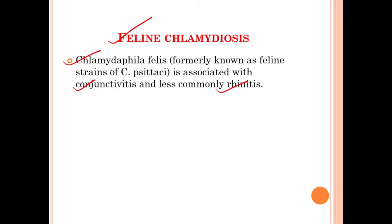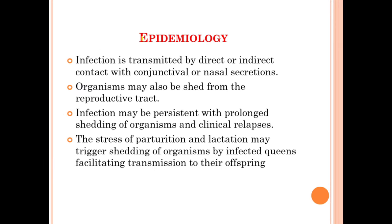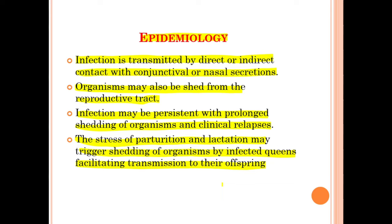Moving on, we will discuss about the epidemiology. The infection is transmitted by direct or indirect contact with conjunctival and nasal secretions. Organisms may also be shed from the reproductive tract. Infection may be persistent with prolonged shedding of the organisms and clinical relapses. The stress of parturition and lactation may trigger shedding of organisms by infected queens, facilitating the transmission to their offspring.